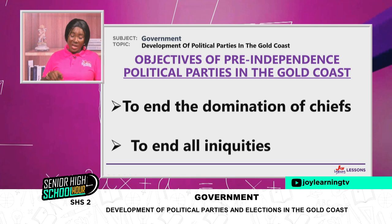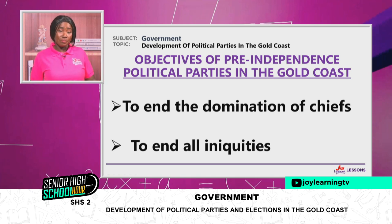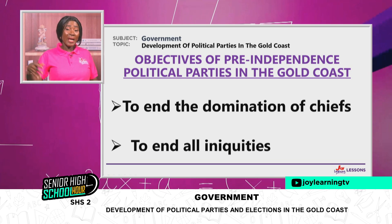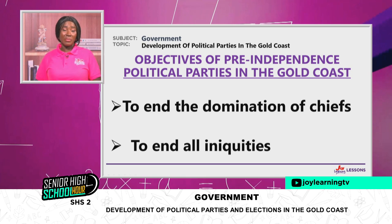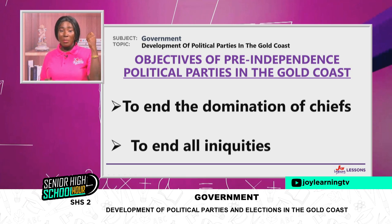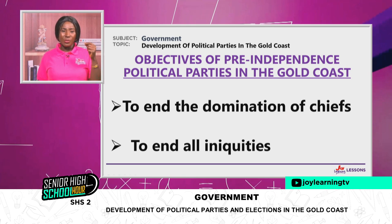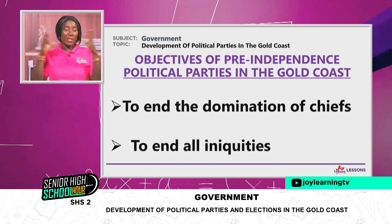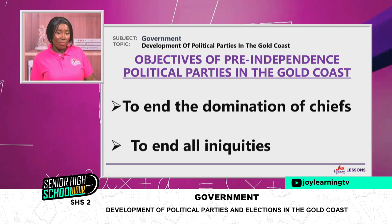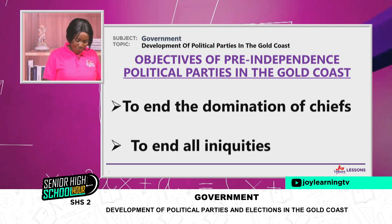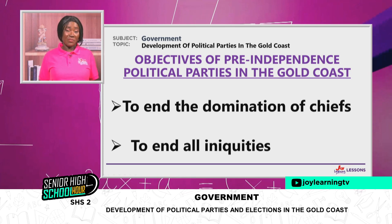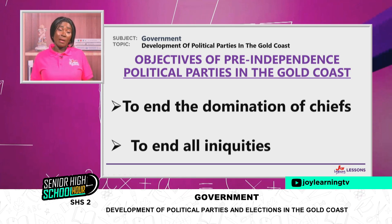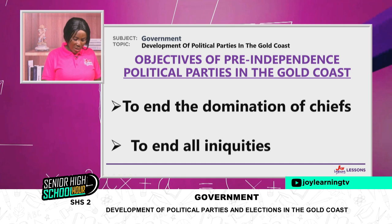The last objective was to end all iniquities. Colonization was an evil that had to be eradicated. It came with racial discrimination and people being intimidated. When political parties are there, it would give them the chance to end all iniquities. So then, around 1946, when the Alam Ban's constitution had been created, the first political party was introduced.